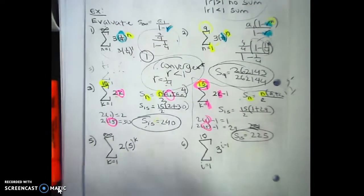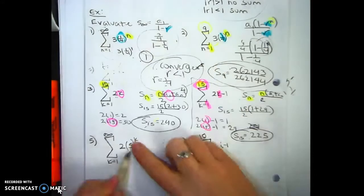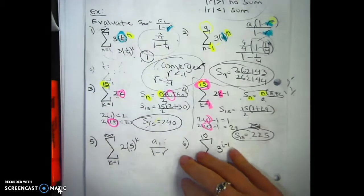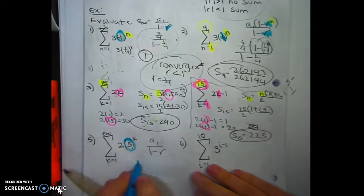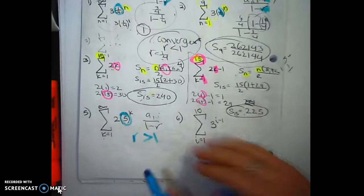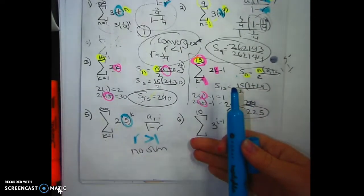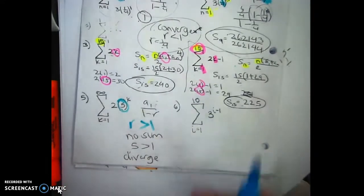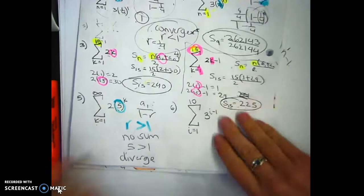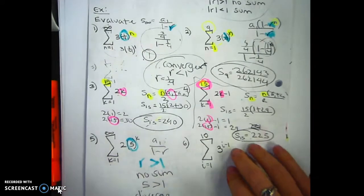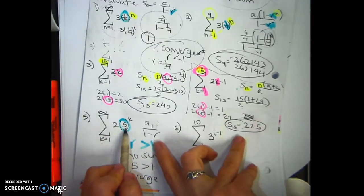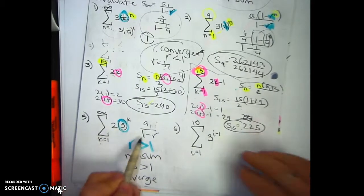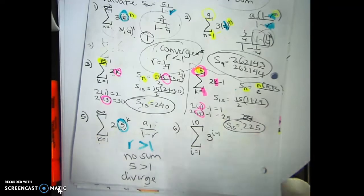Number 5 looks similar to number 1 — it's an infinite geometric sequence because it's taken to a power. But you have to be careful: the ratio is greater than 1, so there is no sum. It diverges. It wouldn't make sense anyway because the terms grow exponentially; and if you tried 1 minus 5, you'd get a negative number, which makes no sense.